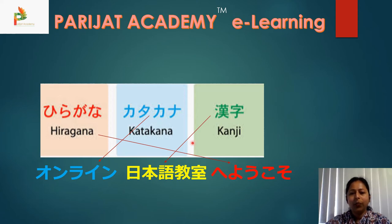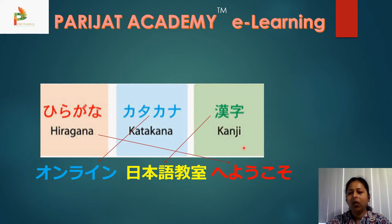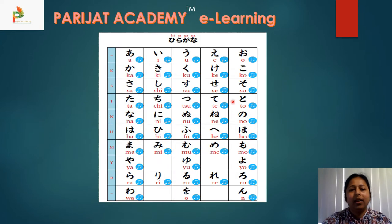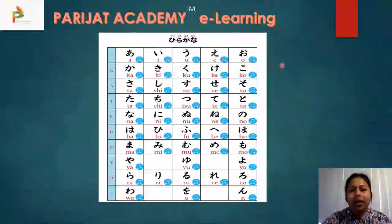Each kana is equal to one sound, so we need to memorize the sound of each letter or each kana. Let us first begin with hiragana. It has five basic sounds.